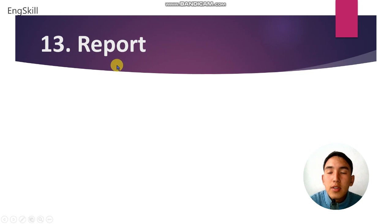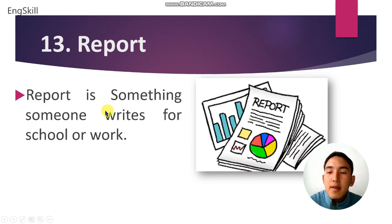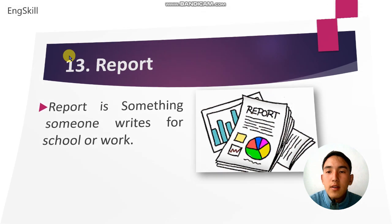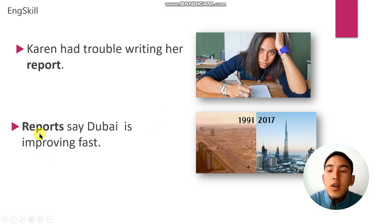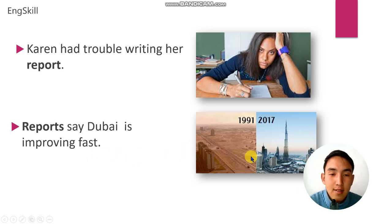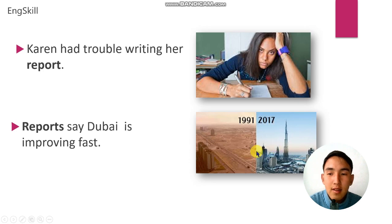Number 13 is report. Report is something someone writes for school or work. For example: Karin had trouble writing her report. Example number 2: reports say Dubai is improving fast. This is a picture of Dubai in 1991 and in 2017 — it has improved very fast.